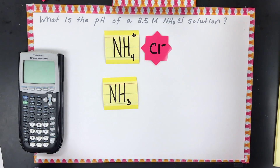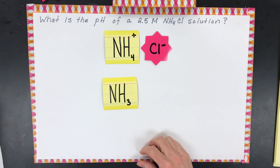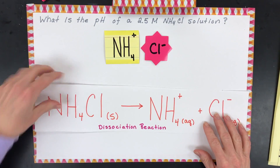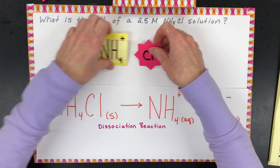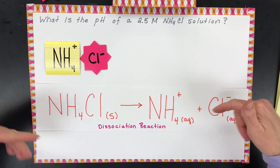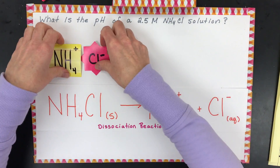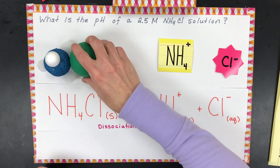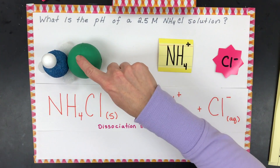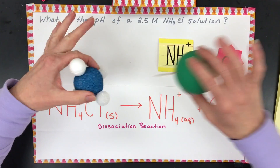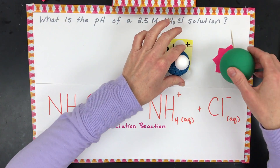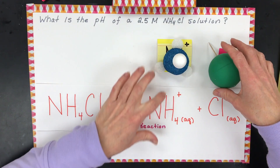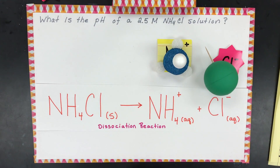Next I'm going to show you what it means to be an acidic salt. When ammonium chloride dissolves, it dissociates into ammonium ions and chloride ions. Here I have a little model of it — this is the ammonium ion, this is the chloride ion, and when it dissociates the chloride ion comes off. It's negative, the ammonium ion is positive, and they end up being dissociated.